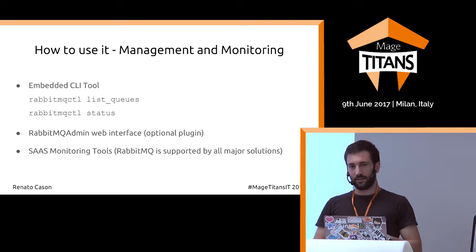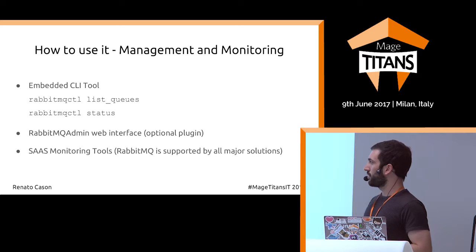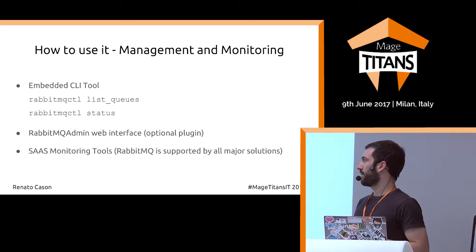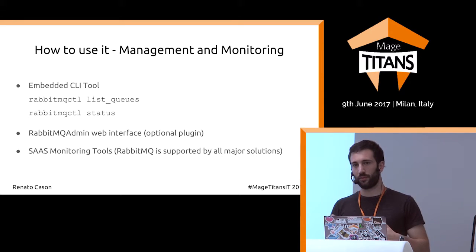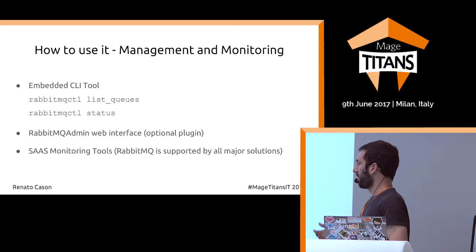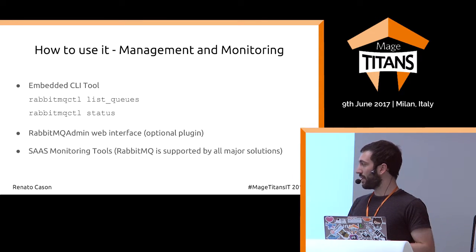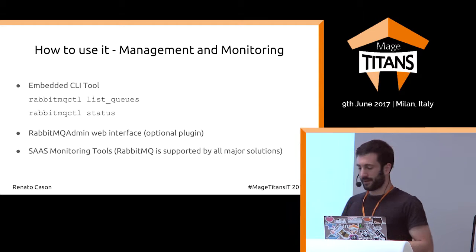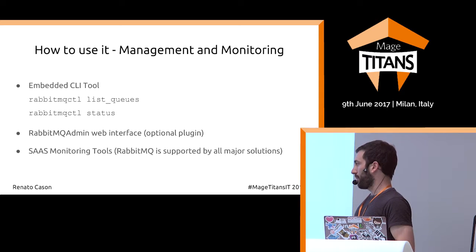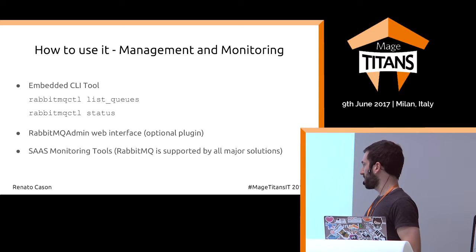Once you've implemented everything, you can use the embedded CLI tool to list queues, see how many messages are in each queue, and check the RabbitMQ system status. If you want something more user-friendly, you can set up the RabbitMQ admin web interface — it's an optional plugin. In production, you might also want to monitor your queues with a SaaS monitoring tool. RabbitMQ is well-supported by tools you may already use, like Datadog, Dynatrace, or New Relic.